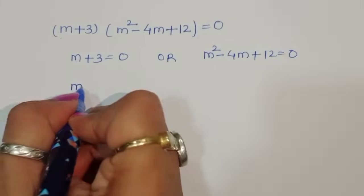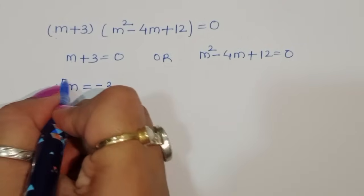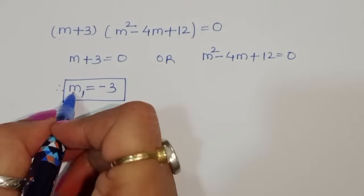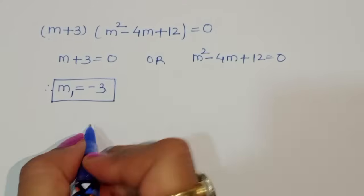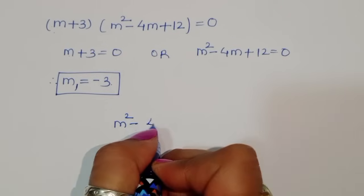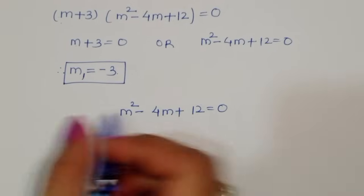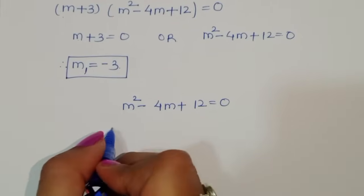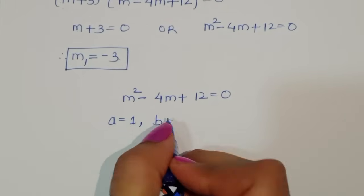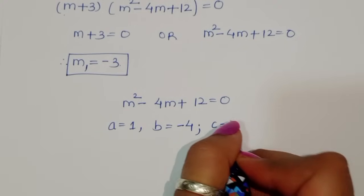From m plus 3 equals 0, we get m equals minus 3, so m1 equals minus 3. For m squared minus 4m plus 12 equals 0, the coefficients are: a equals 1, b equals minus 4, and c equals 12.